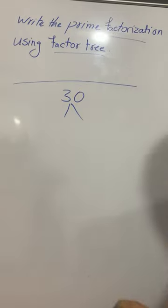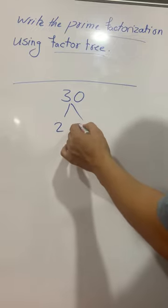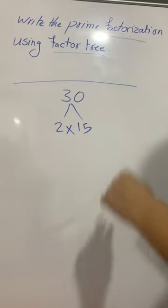To find the prime factors we use factor tree. We write 30 as a product of two numbers. It can be 2 and 15. 2 times 15 is 30.